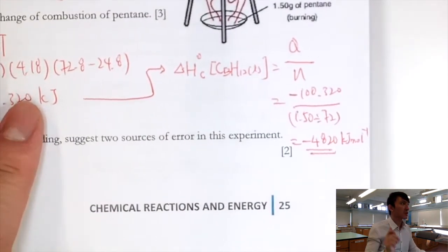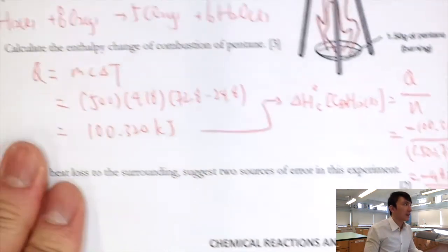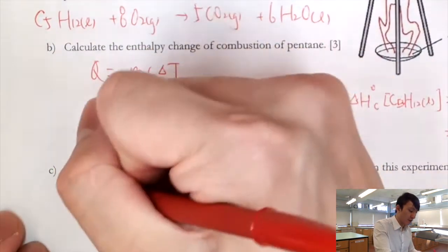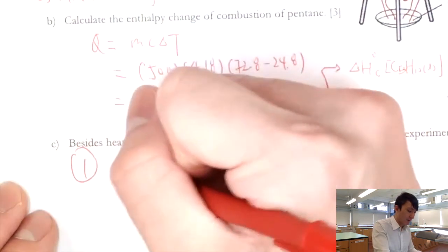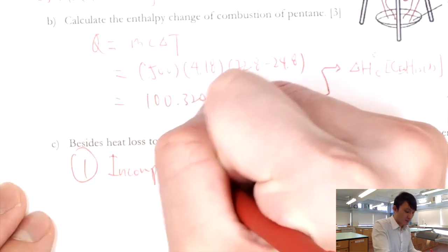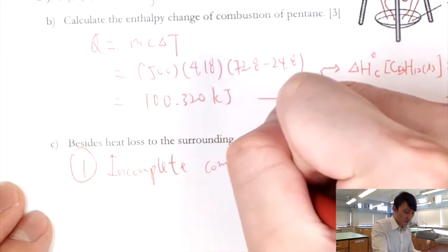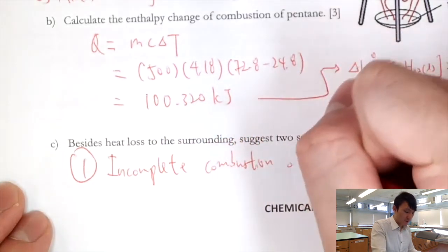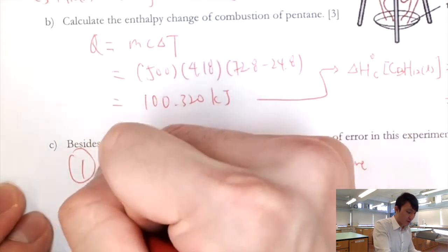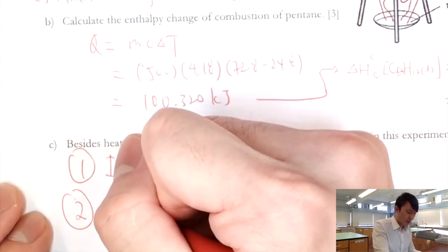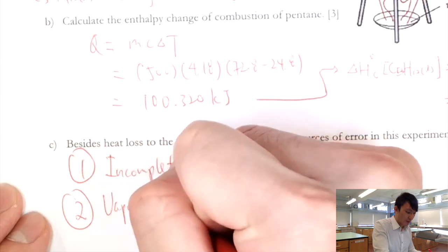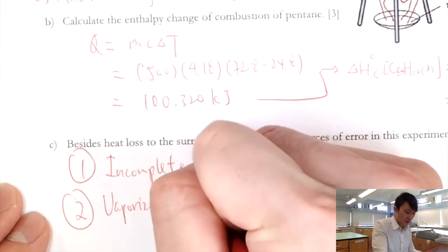Besides heat loss to the surroundings, two sources of error are: incomplete combustion of pentane, and vaporization of pentane.